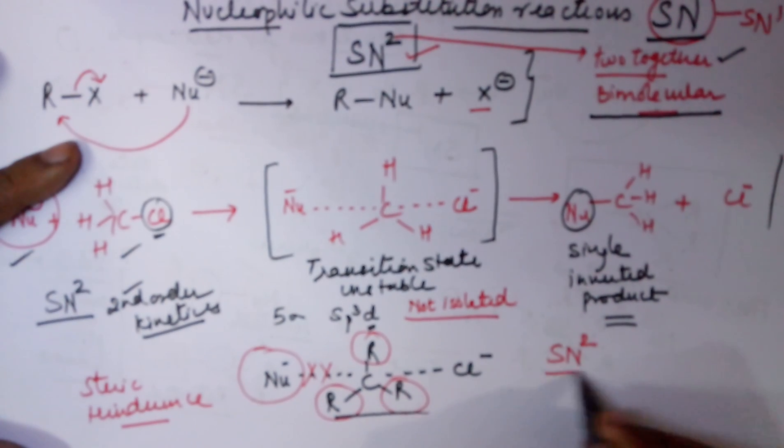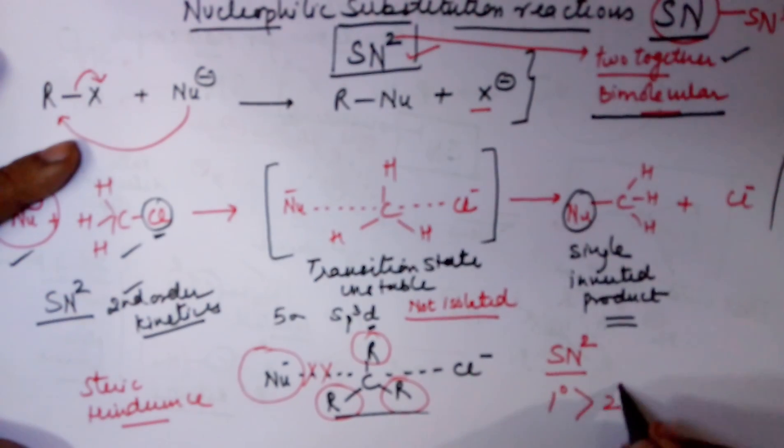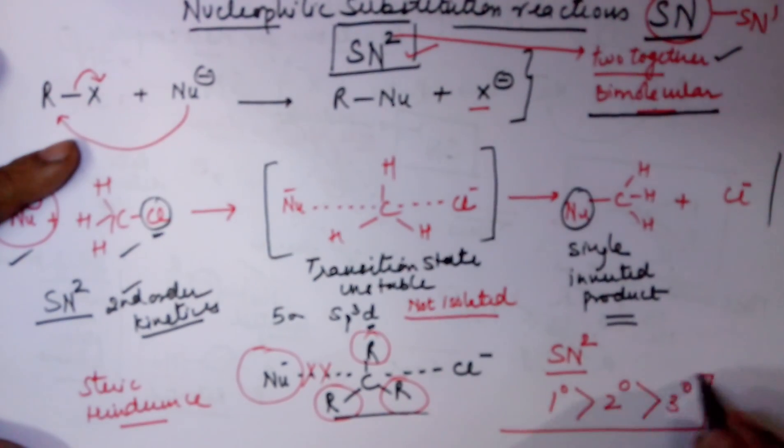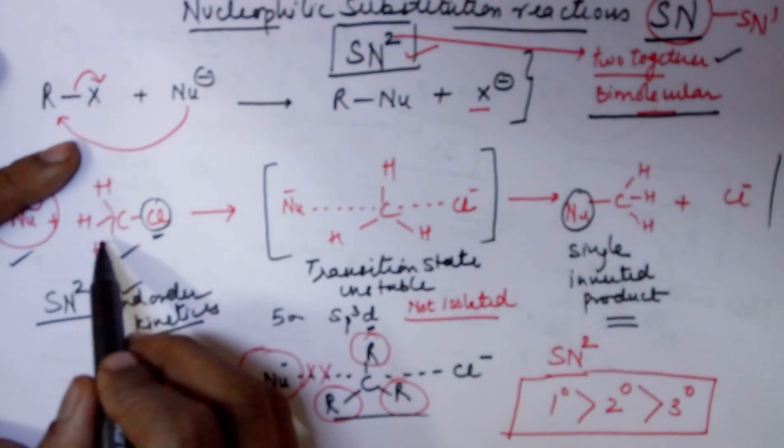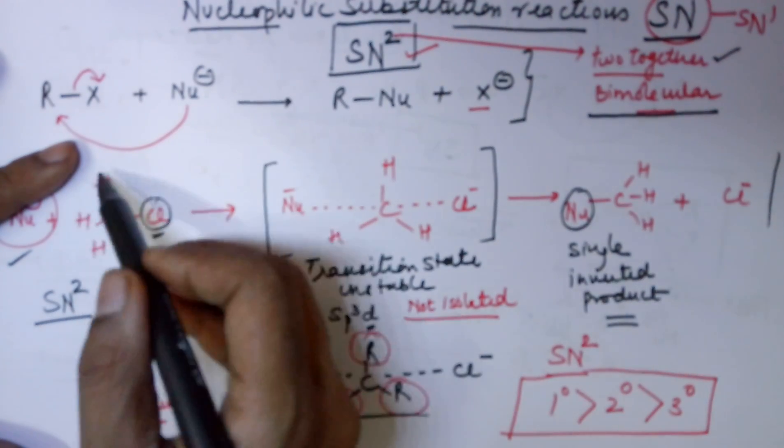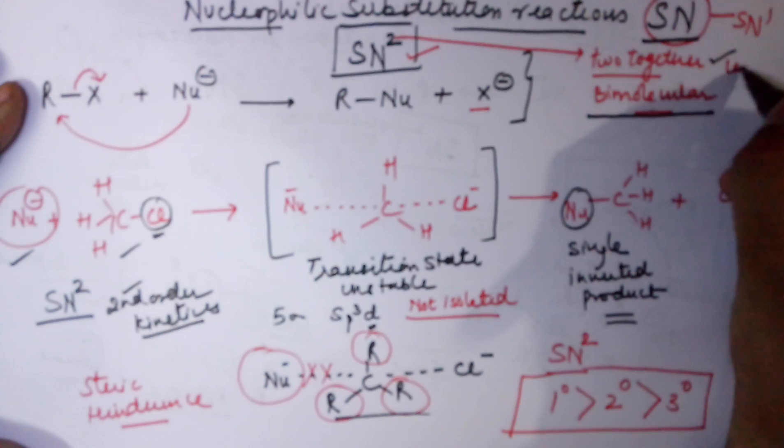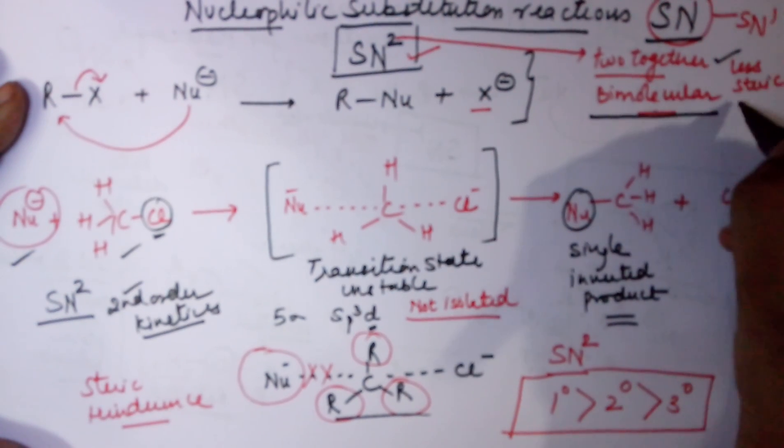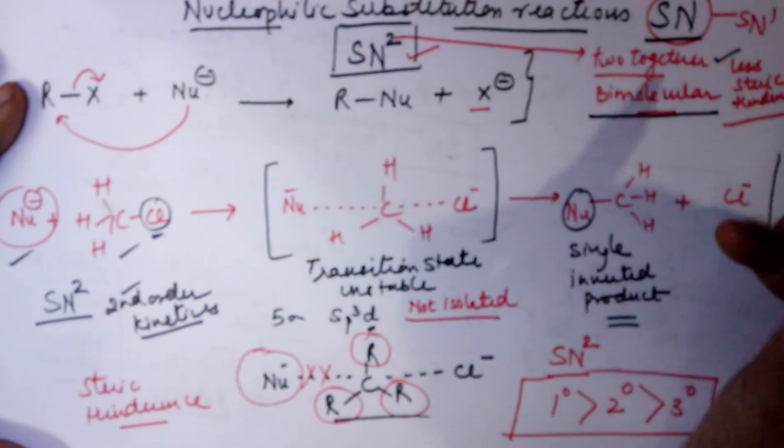Therefore, SN2 is not generally taking place for a three degree alkyl halide. SN2, the order is one degree is preferred, then two degree and then three degree. So, if you have an alkyl halide of this type, you know that two steps have to take place together and it would be possible only if there is not steric hindrance for the incoming nucleophile. So, your keywords, I would advise, the two keywords could be two together and less steric hindrance. Could be your keywords.